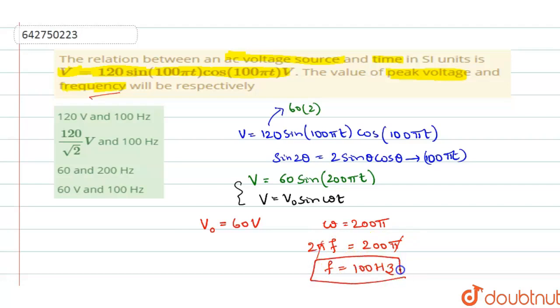The two things which they have asked you to calculate is peak voltage and frequency. Peak voltage is V₀, V₀ is 60 volts and frequency is 100 hertz. See here, the fourth option has 60 volts and 100 hertz. So this is the right answer.